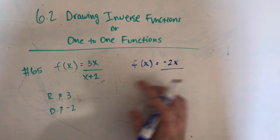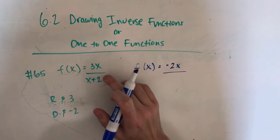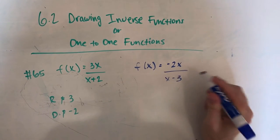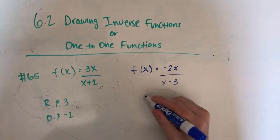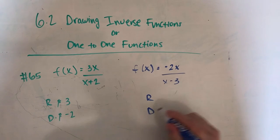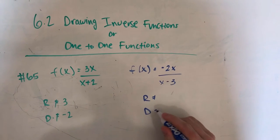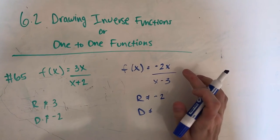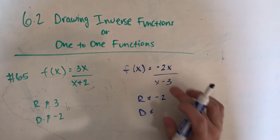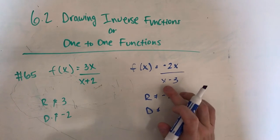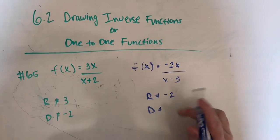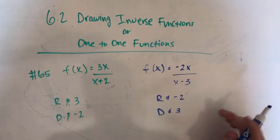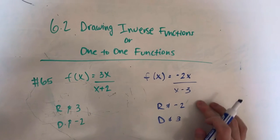Since we've changed the sign here, we're going to do the same with the 3 and throw it in the same fashion. So we do x minus 3. Now we have to find the domain and range of this one. The range can't equal negative 2 for this one because that's what would cancel up here. And the domain can't equal 3 because that's going to make it equal 0. So essentially that's the entire problem — that's the answer right here.